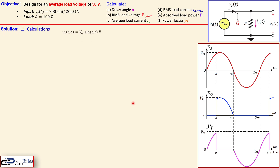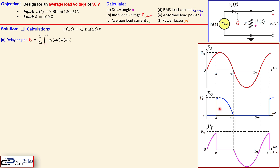We start by defining our general expression for Vs in terms of ωt: Vs = Vm·sin(ωt), where ωt corresponds to 120π·t and Vm = 200 volts. The delay angle alpha is calculated using the formula for the average value, since our objective is to achieve 50 volts average. This is the general formula with 1 over 2π for the full period. The integration does not start at 0 but at alpha, so it goes from alpha to π.